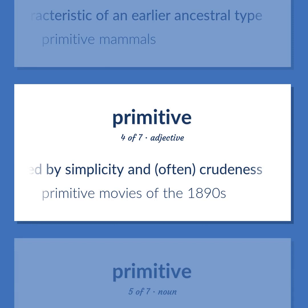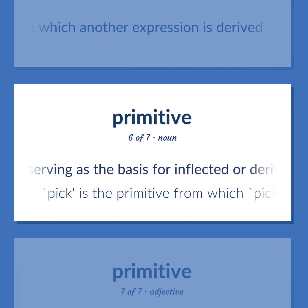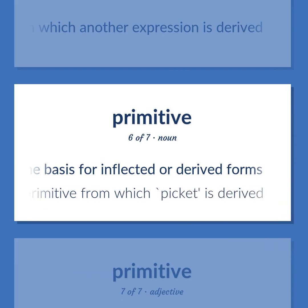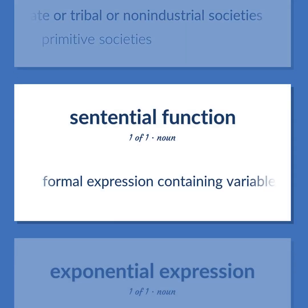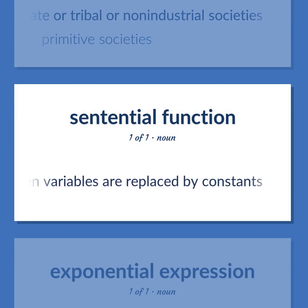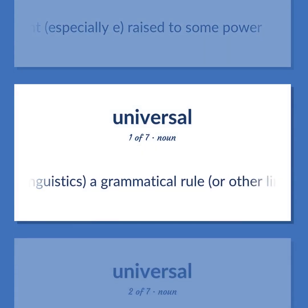Primitive: primitive movies of the 1890s. A mathematical expression from which another expression is derived. A word serving as the basis for inflected or derived forms — 'pick' is the primitive from which 'picket' is derived. Used of preliterate or tribal or non-industrial societies — primitive societies. Universal: formal expression containing variables that becomes a sentence when variables are replaced by constants. A mathematical expression consisting of a constant, especially e, raised to some power. Linguistics: a grammatical rule, or other linguistic feature, that is found in all languages.